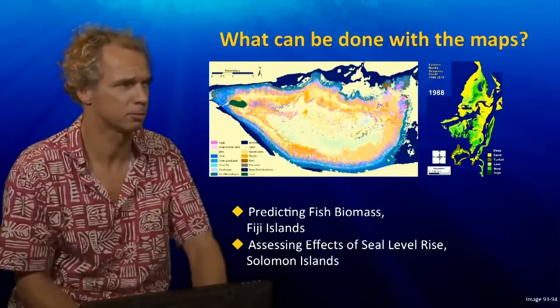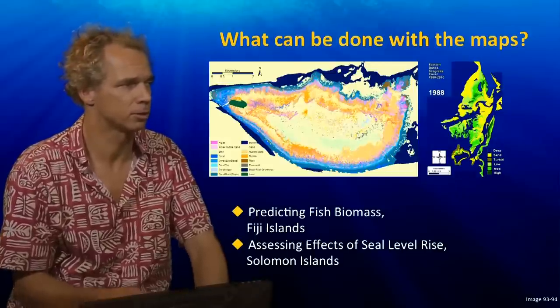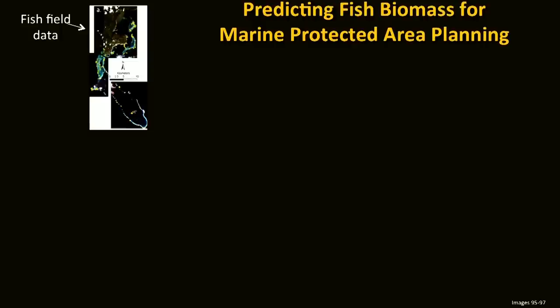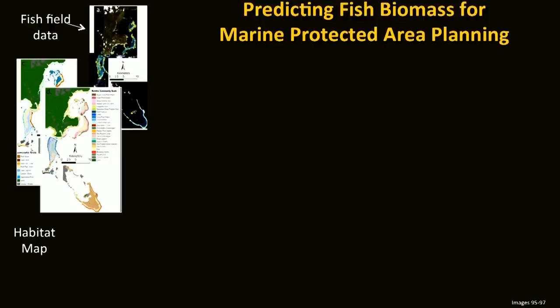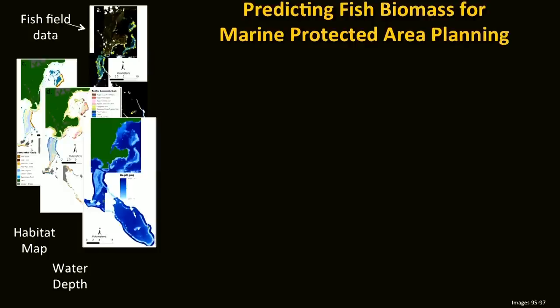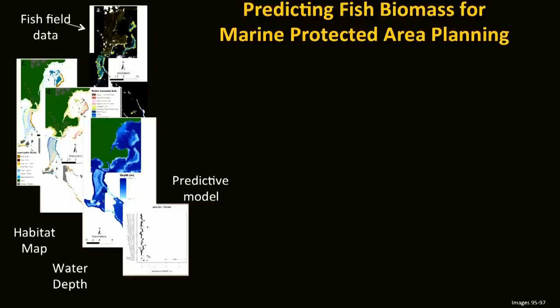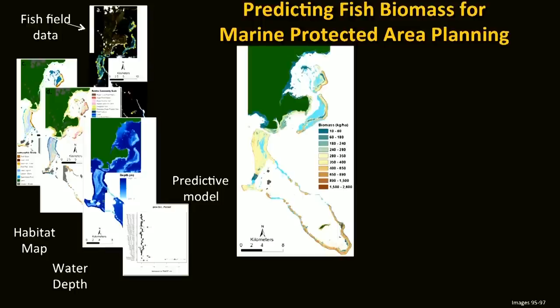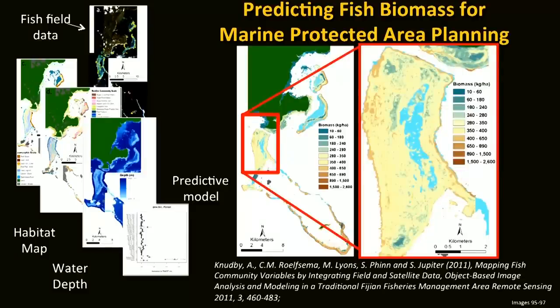For example, we did work in Fiji predicting fish biomass, and in the Solomon Islands assessing impacts of sea level rise. To determine marine protected areas, you need knowledge about reef composition as well as where fish are and how much fish there is. In this project we used fish field data combined with habitat maps and water depth maps — both derived from satellite imagery — and a predictive model to create biomass maps of fish. These maps provide a high level of detail showing where high fish biomass is expected, and can be used as input for marine park planning.